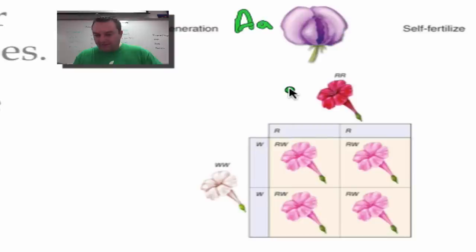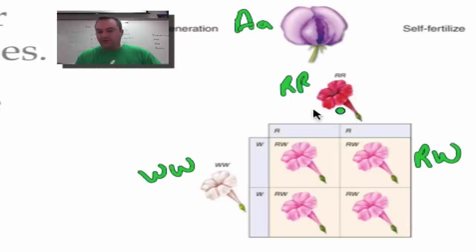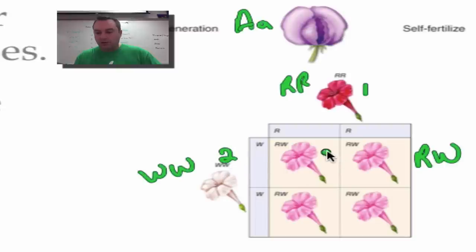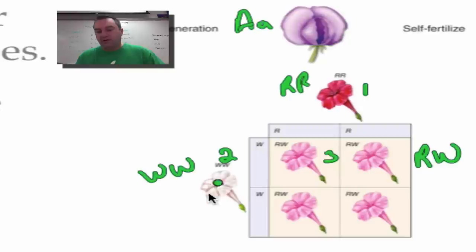With three different phenotypes you have incomplete dominance or co-dominance. In incomplete dominance, a red homozygous (RR) crossed with a white homozygous (WW) produces pink (RW) offspring — three phenotypes: red, white, and pink. In co-dominance, some petals would be red and some white, so the third phenotype would show both red and white rather than a blend.